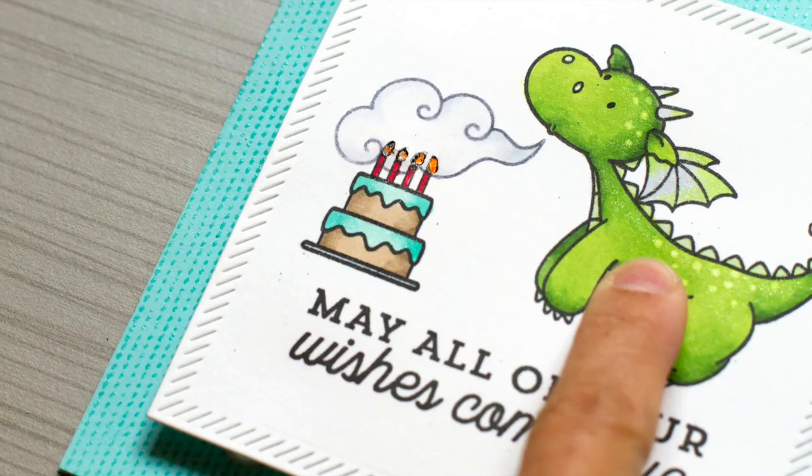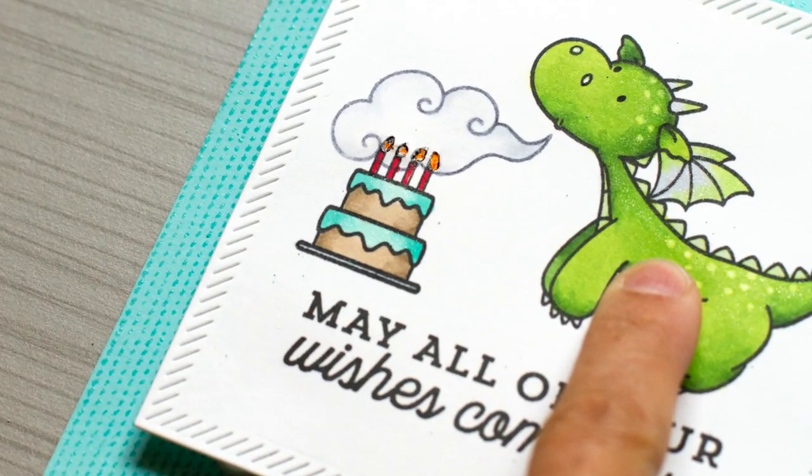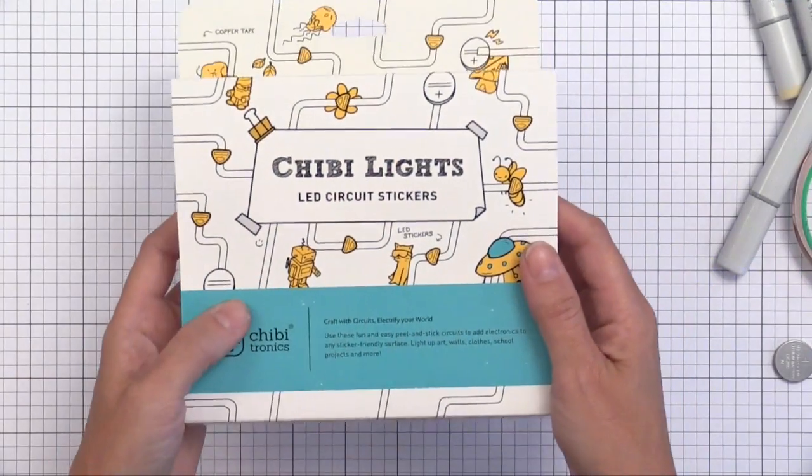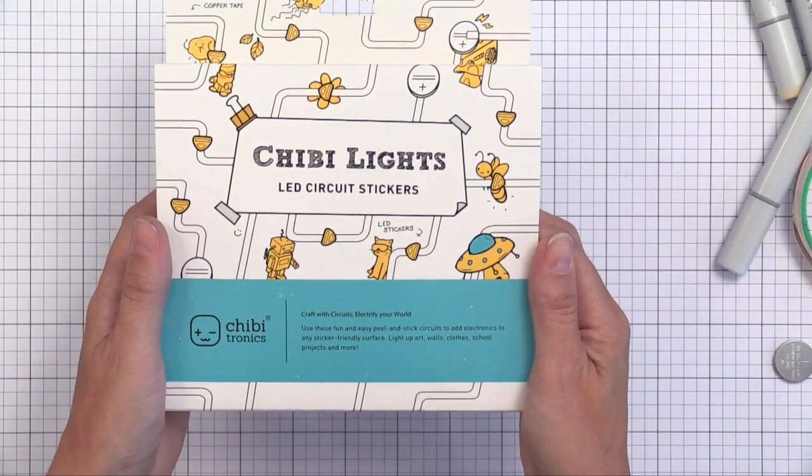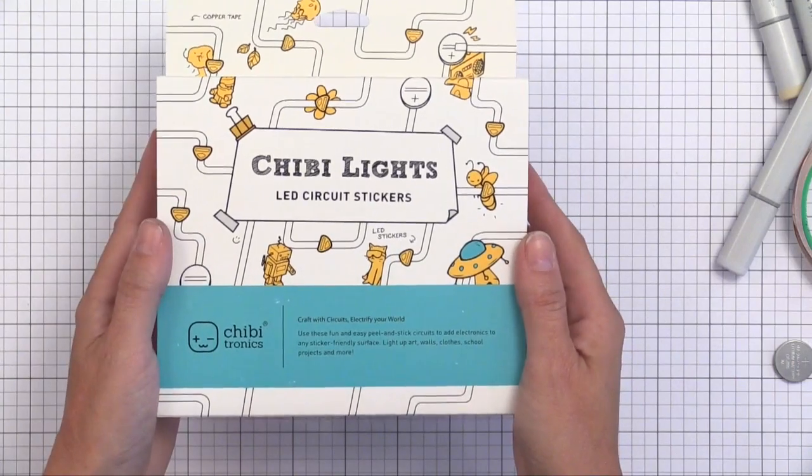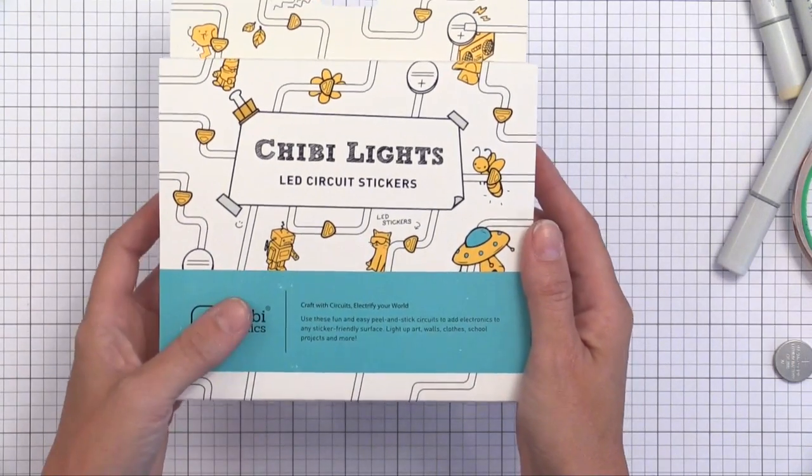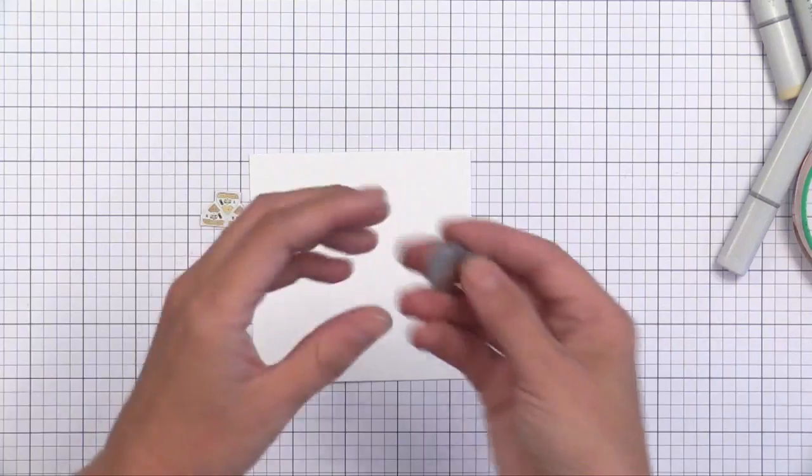Now we're going to create this light up effect. You need to create a circuit. Don't let that scare you, it's very easy to do. I use this Chibi Chonics Light Up Kit, so it has everything you need in this kit. It's really fun to put together. My kids have loved making these with me.